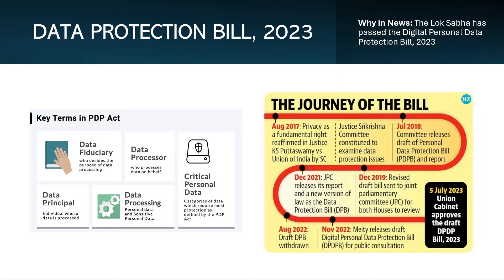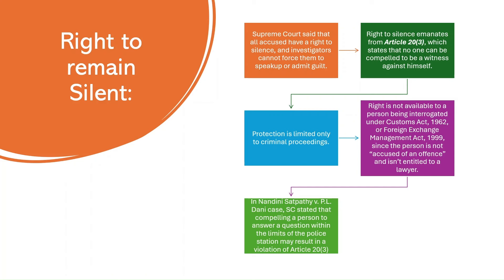Data fiduciaries — entities determining data processing — must ensure accuracy, build security safeguards, and report any breaches to the government. Government entities have specific regulations. The bill allows transfer of personal data outside India but with certain restrictions set out by the government. Certain exemptions apply, like prevention of offenses or enforcement of legal rights. To enforce these provisions, the government will establish a Data Protection Board of India to monitor compliance, impose penalties, and address grievances. Data is the new currency of the digital age, and proper regulation is required to ensure data security.